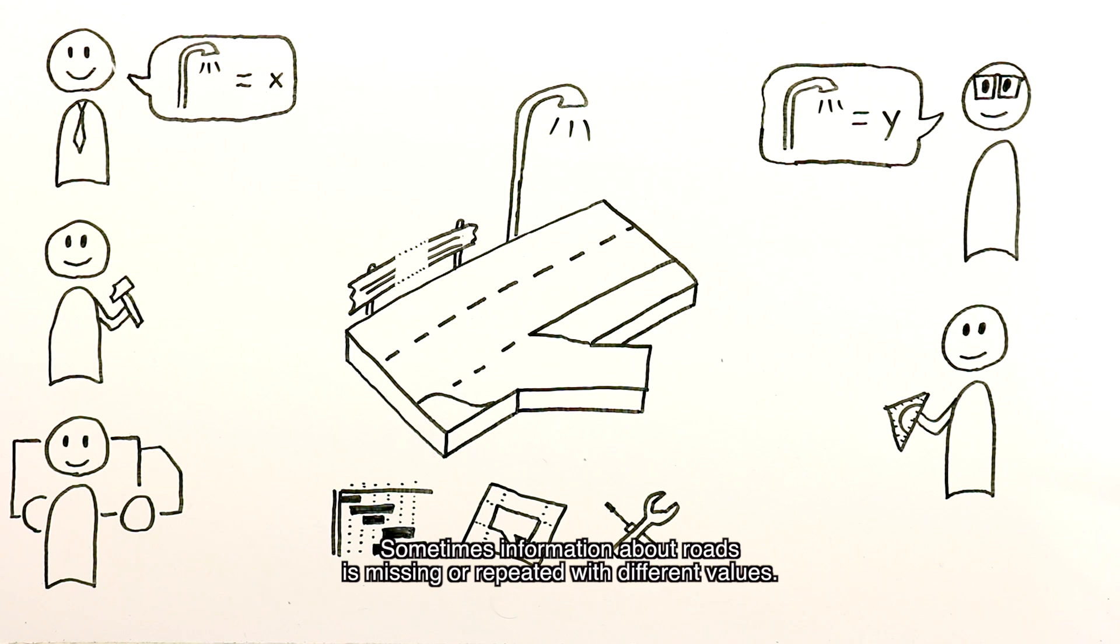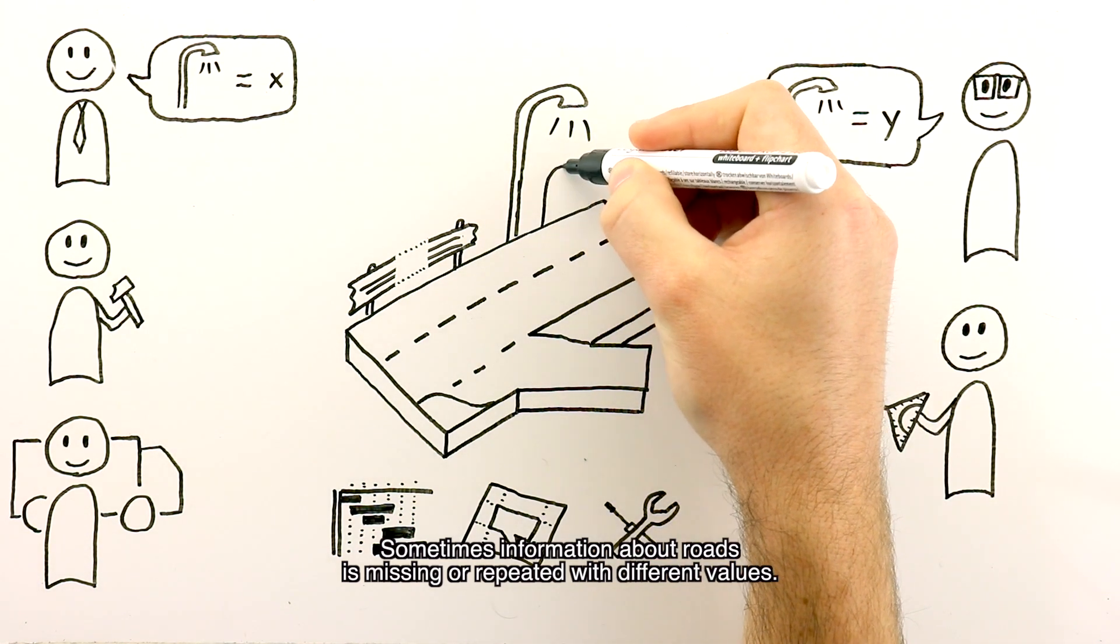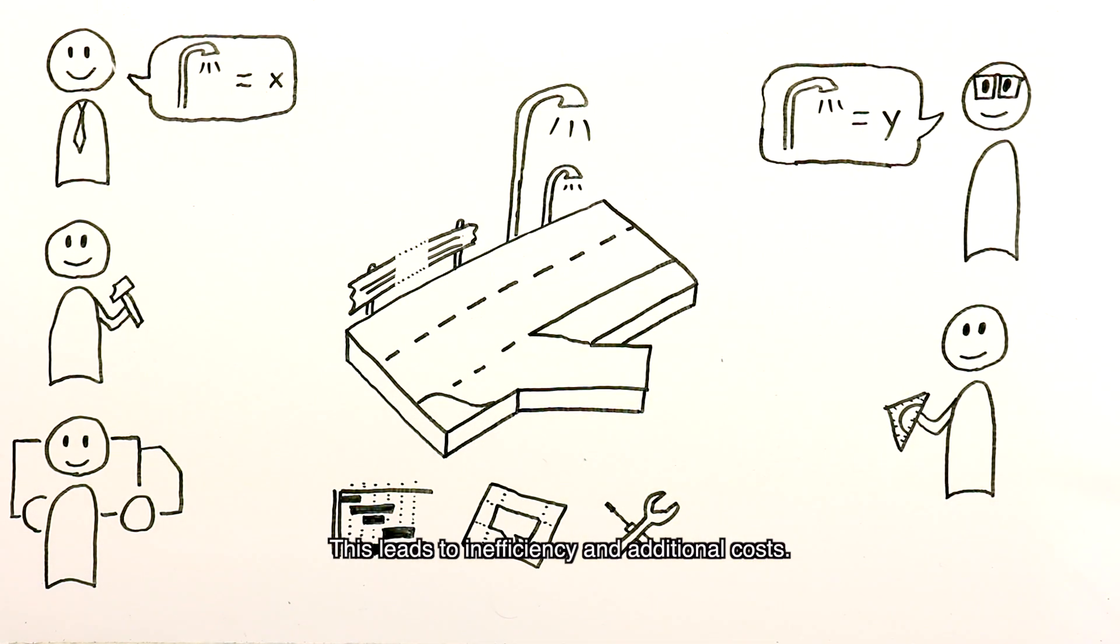Sometimes information about roads is missing or repeated with different values. This leads to inefficiency and additional costs.